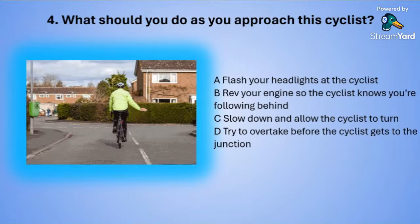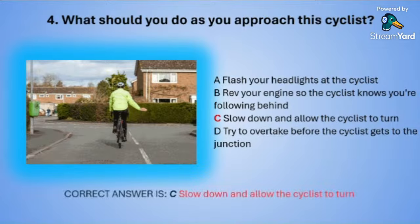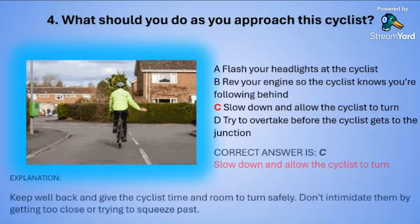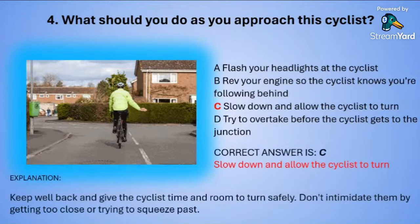The correct answer is C — slow down and allow the cyclist to turn. You need to keep well back and give the cyclist time and plenty of room to turn safely. Don't try to intimidate the cyclist by getting too close or by trying to squeeze past.